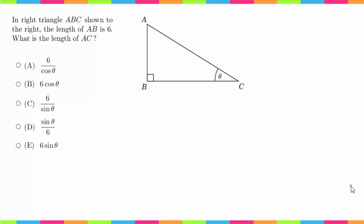Hey guys, welcome back. We're now working on question 41, and this question says in right triangle ABC shown to the right, the length of AB is 6. What is the length of AC? So that tells us that this distance is 6 and we're looking for this. The first thing to note is that this is a right triangle.